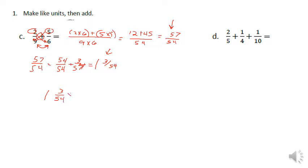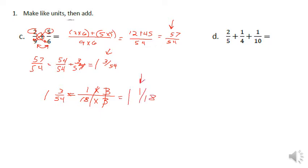There's another answer because I can simplify — both three and 54 are divisible by three. Five plus four is nine, and nine is divisible by three, so I can do one times three and 18 times three equals 54. Taking out the common factor, this also equals one and one eighteenth. So there are three good answers.